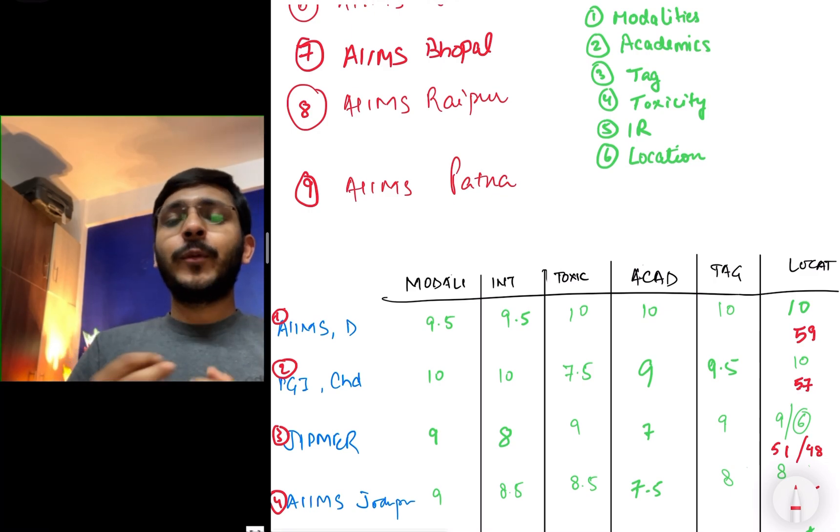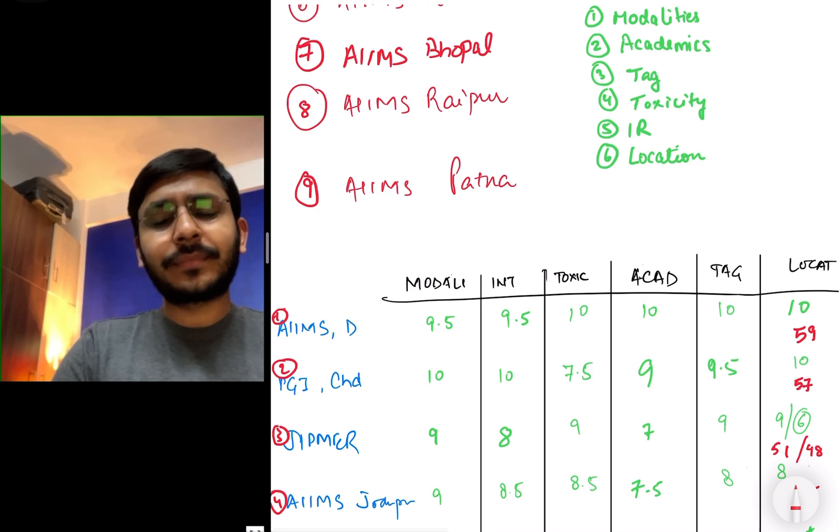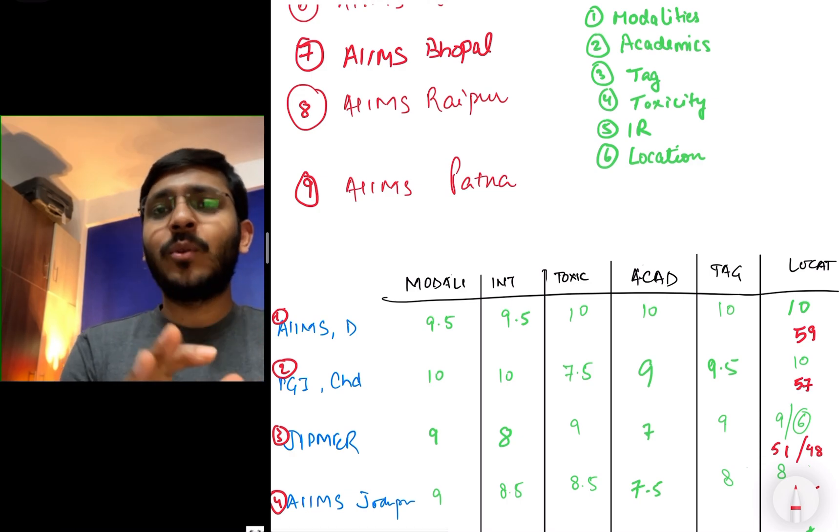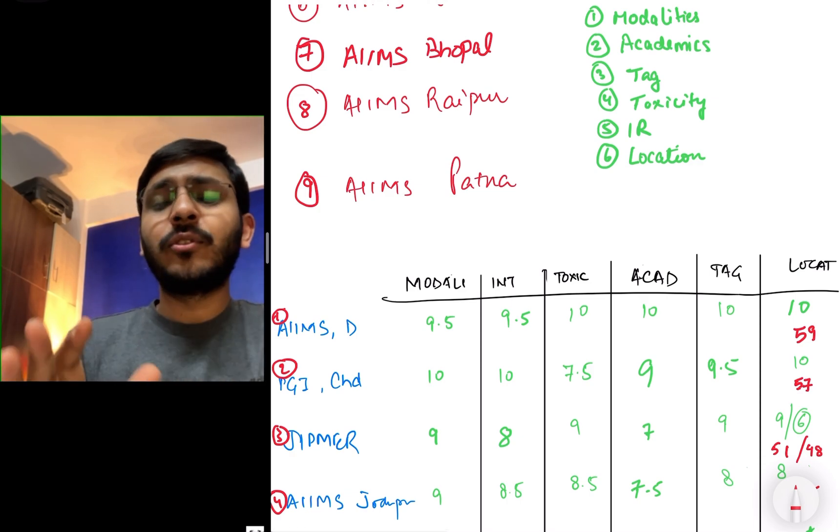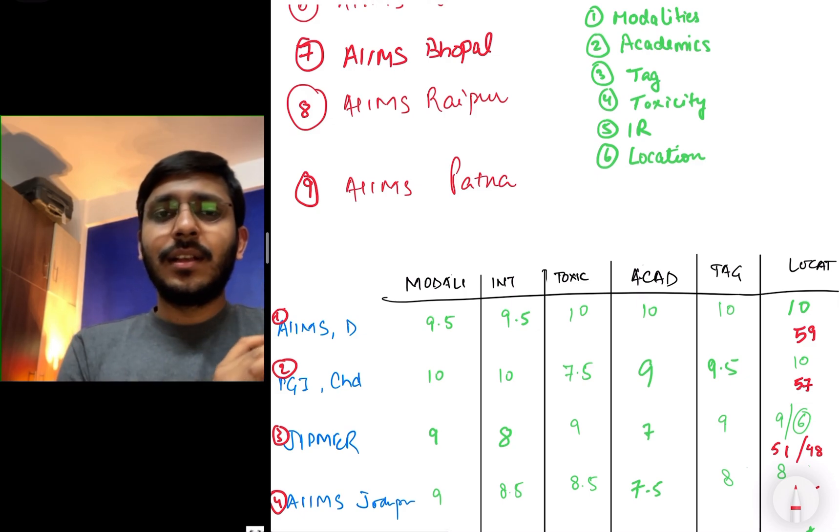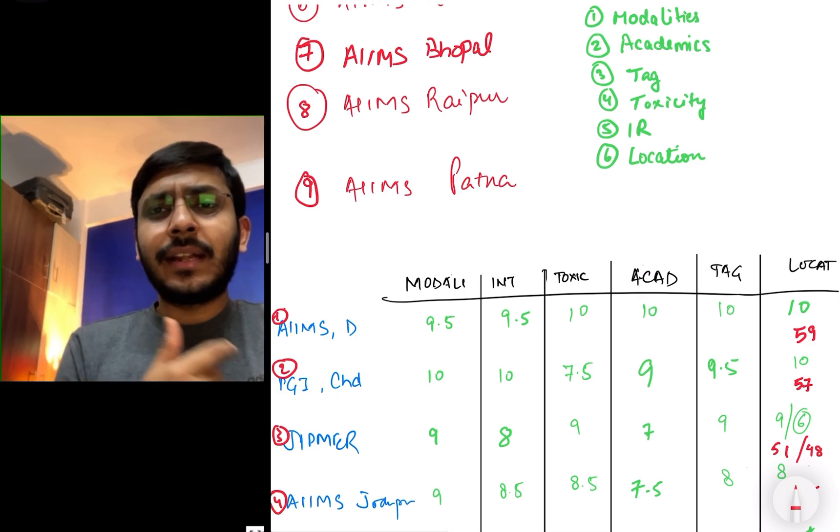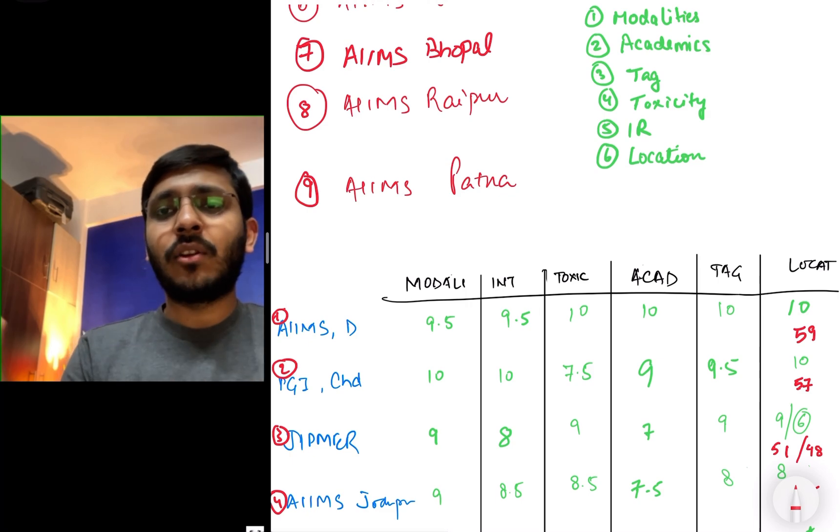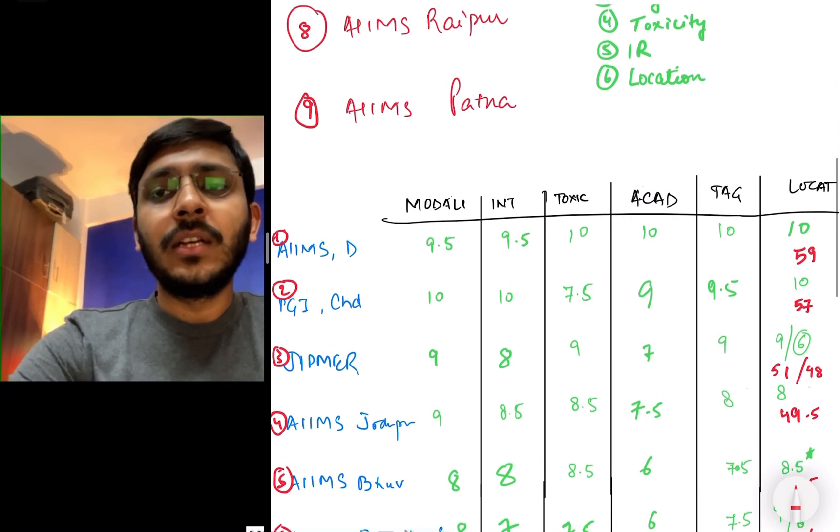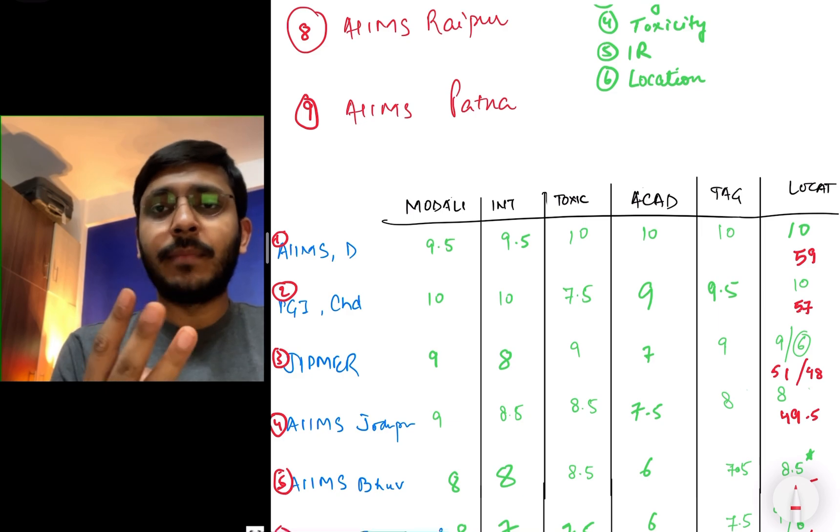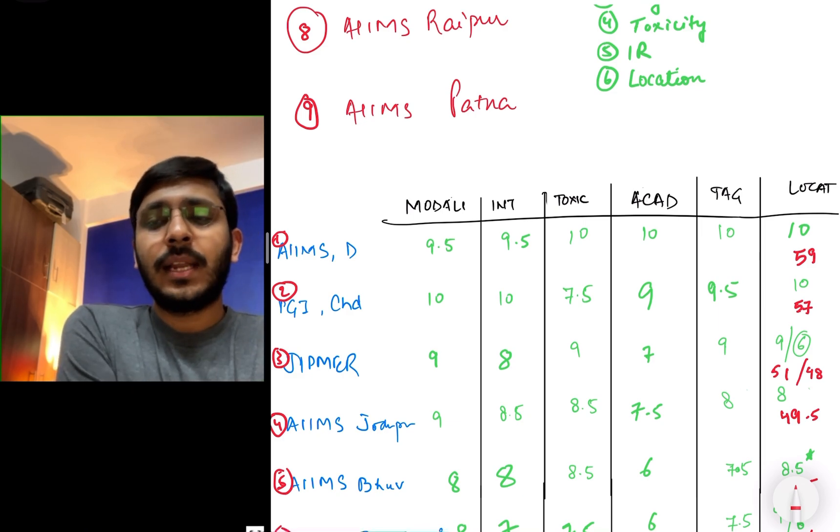In terms of tag, PGI Chandigarh has a very good tag. Not as good as AIIMS New Delhi but it has a pretty good tag for radiology in India. If you are a radiologist from PGI Chandigarh, people recognize what you are capable of. Location again 10 on 10. Chandigarh is according to me the best city in India to live. Amazing roads, hygiene, air quality, good social life, nice restaurants. A little bit traffic has increased recently but 10 on 10 in terms of location. At number 3 there is JIPMER. JIPMER also has all the modalities. I have given it 9 because not the same quality and number as compared to AIIMS New Delhi and PGI.